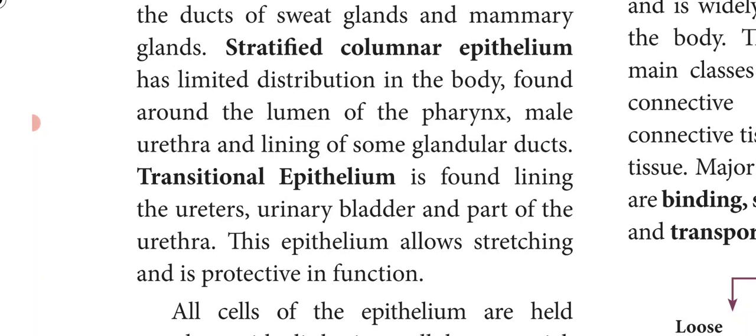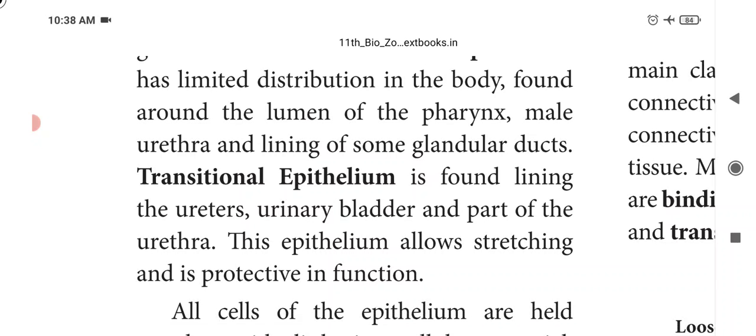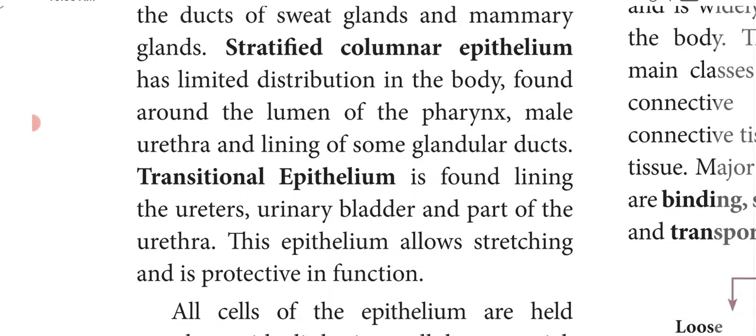Transitional epithelium is found lining the uterus, urinary bladder and part of the urethra. This epithelium allows stretching and is protective in function.